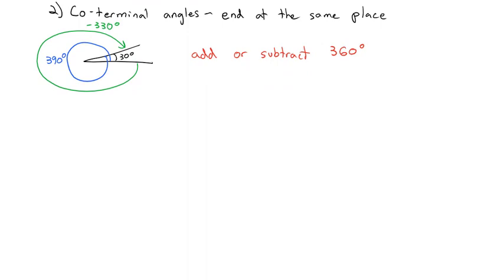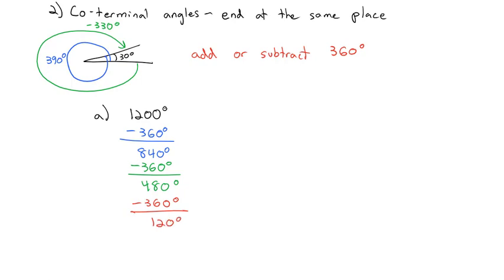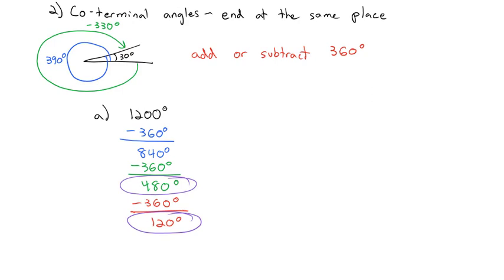For example, if I have a 1,200-degree angle, I could find a coterminal angle by subtracting 360 degrees to get 840 degrees. Subtracting 360 again gives 480 degrees. Subtracting 360 once more gives us our first angle between 0 and 360 — 120 degrees. So 120, 480, 840, and 1,200 degrees are all coterminal angles.